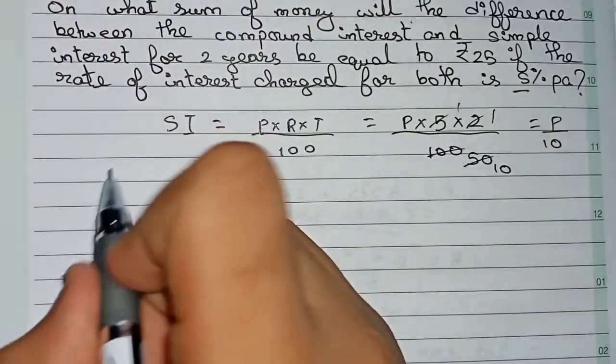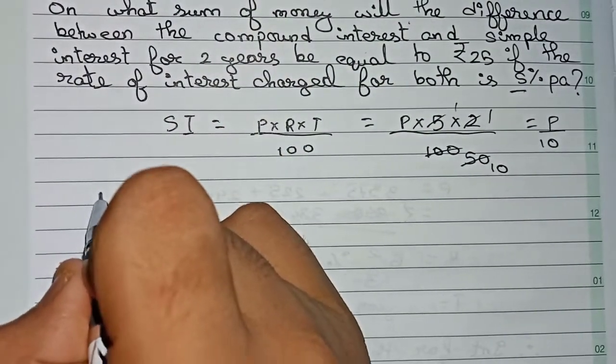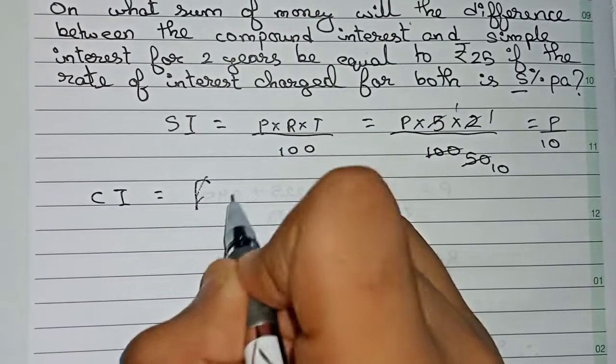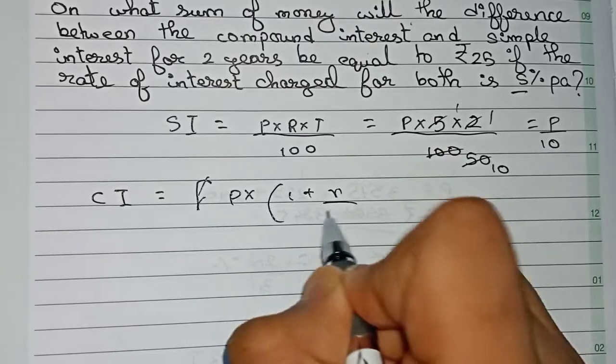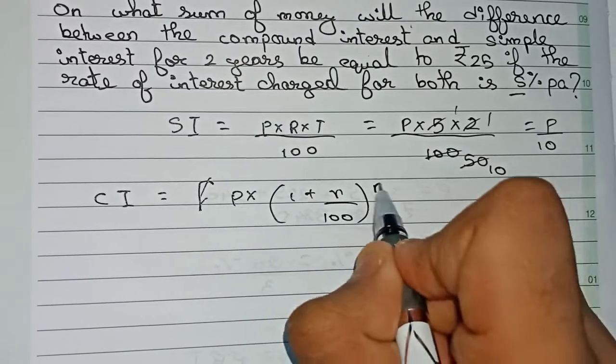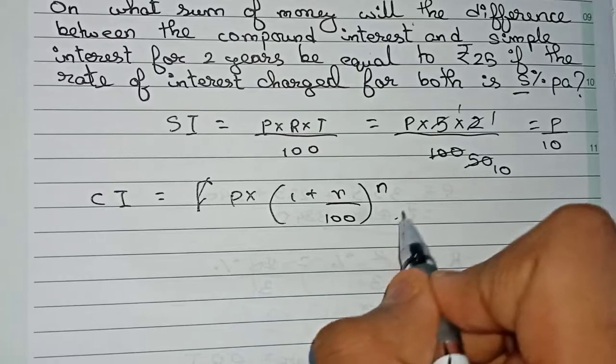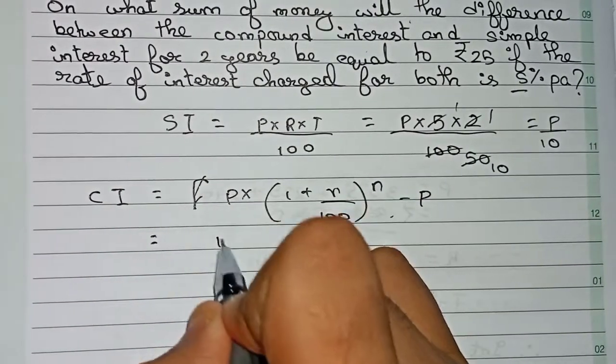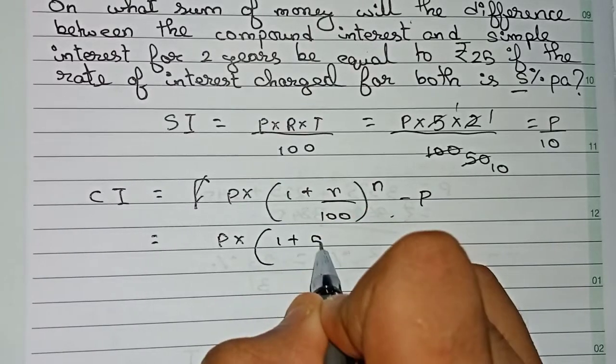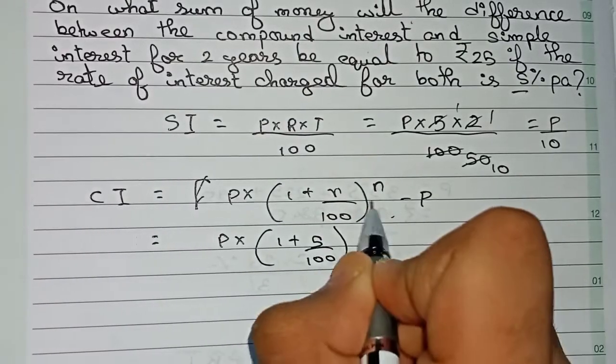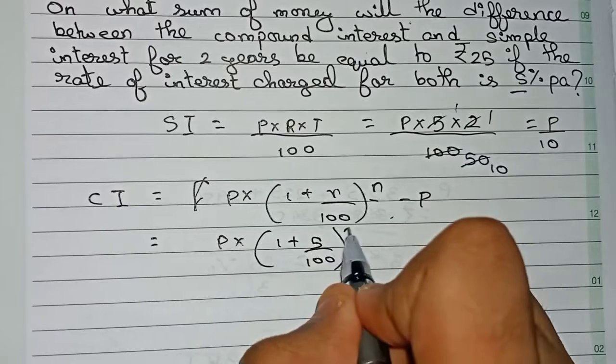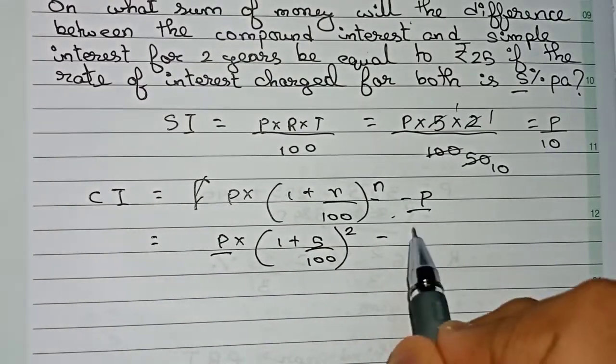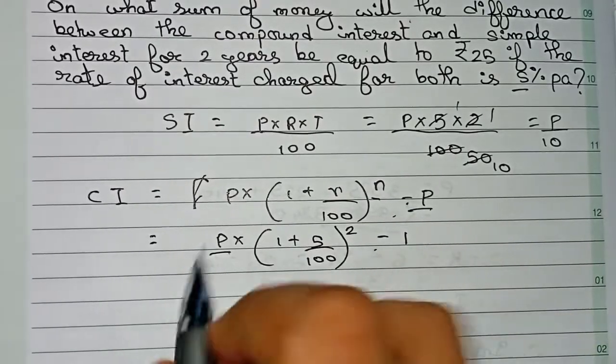Therefore this will be the simple interest. So now you find out the formula for compound interest. CI equals - we know principal into (1 plus rate by 100) to the power n minus again the principal. So now I put down the values: principal unknown P into (1 plus rate is 5 by 100) to the power n, the time that is 2, minus. So if you take this P as the common, this P will become minus 1 here.